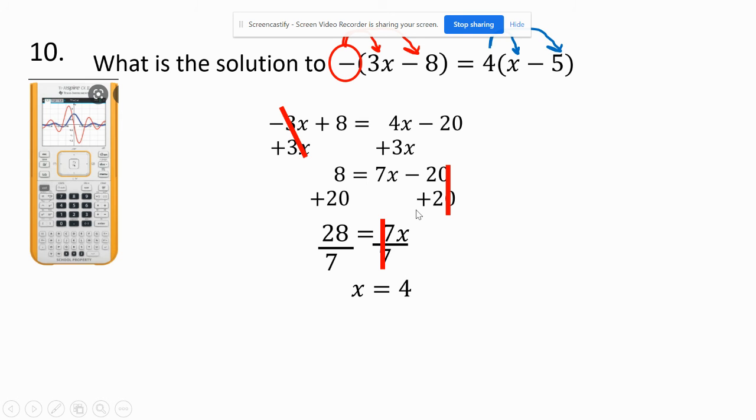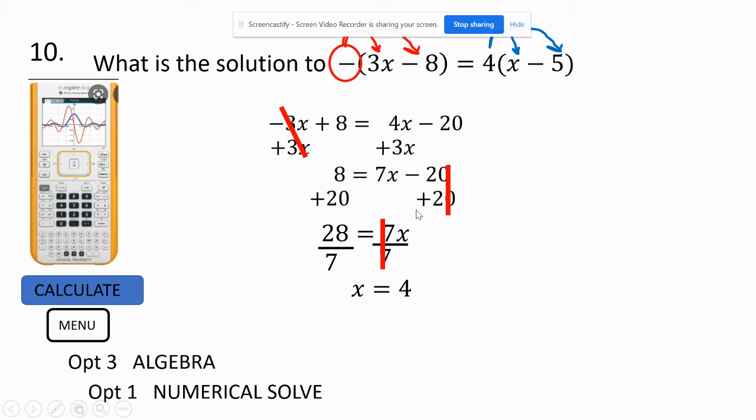And once again, I can go test it in the calculator. Calculate menu. Option 3. Algebra 1. Numerical solve. Type it in. This time, notice the extra parentheses. You have to have the whole thing in one parentheses. So, these extra parentheses have to be added. And you can have more than one thing on the equal besides what the number is. Enter. And it works. I got also the number 4.